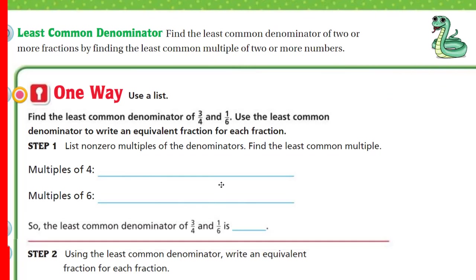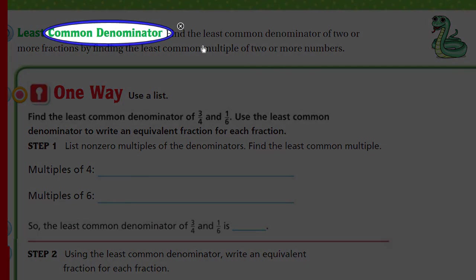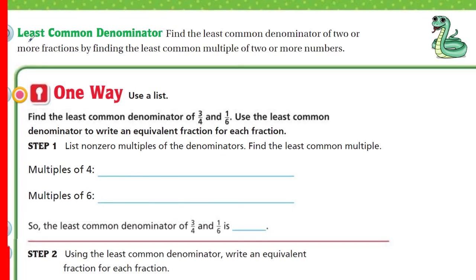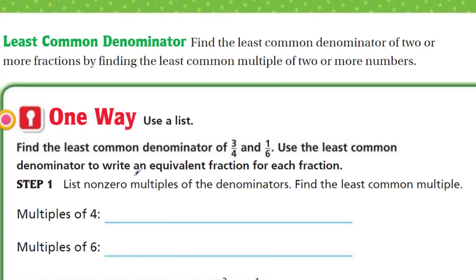Now, it's the least common denominator. We were talking about common denominators before, which I understood. It means it's a denominator that they both have. We had twelve and twenty-four. But now it says least. Least means less. So, the least common denominator. To find the least common denominator of two or more fractions by finding the least common multiple of two or more numbers. I get it. Use a list. So, this is just another way.